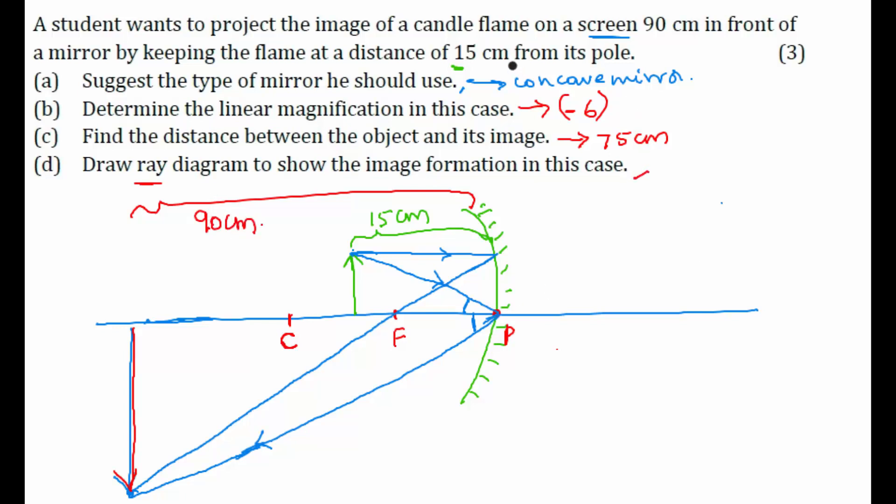This is our fourth question. So for first question answer is concave mirror. For second question answer is minus 6 where minus sign indicates the image is inverted and 6 indicates the image is magnified since it is greater than 1. Now distance between object and image is 75 centimeters and here is the diagram to show the image formation in this case.